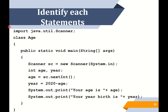Let's identify each statement from an example of coding. Class H — we call it as class declaration. Next, 'public static void main(String[] args)' — this is the method main. Starting from the open curly braces under the public static and the closed curly braces before the end of the class — this is the body of method main. 'Scanner sc = new Scanner(System.in)' — this is creating the object. 'int age' — this is declaring the variable. 'age = sc.nextInt()' — this is the input statement. 'year = 2020 - age' — this is the processing statement. And 'System.out.println(...)' — this is the output statement.